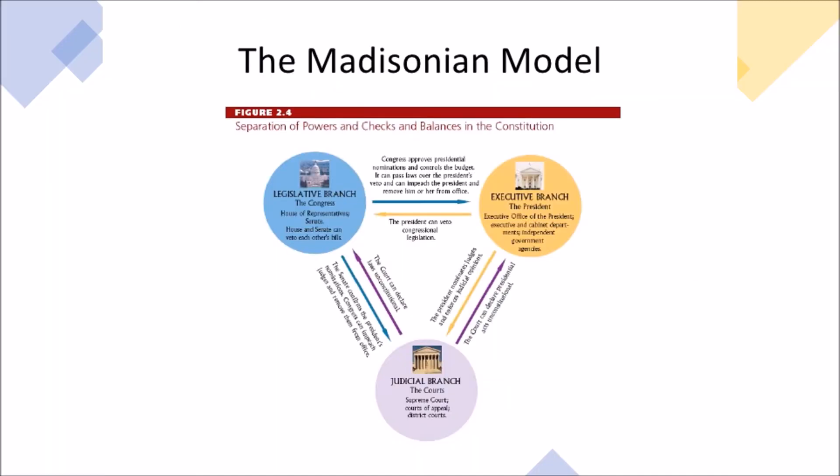The combination of separation of powers and checks and balances is known as the Madisonian model, because Madison came up with it and argued for it in this Federalist paper.